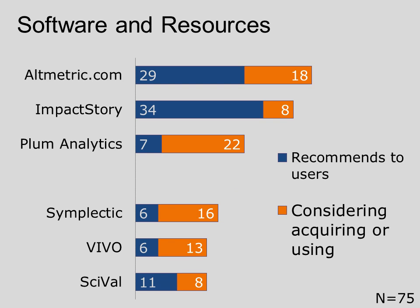We see Impactstory again as we look at the top six resources that libraries are considering acquiring or using, shown here in orange. We clustered them to better visualize the trends. The top cluster appears with altmetric.com, Impactstory, and Plum Analytics — providing evidence of libraries' interest in alternative metrics. The second cluster with Symplectic, VIVO, and SciVal reflects libraries' interest and involvement in research information management plus research networking platforms.